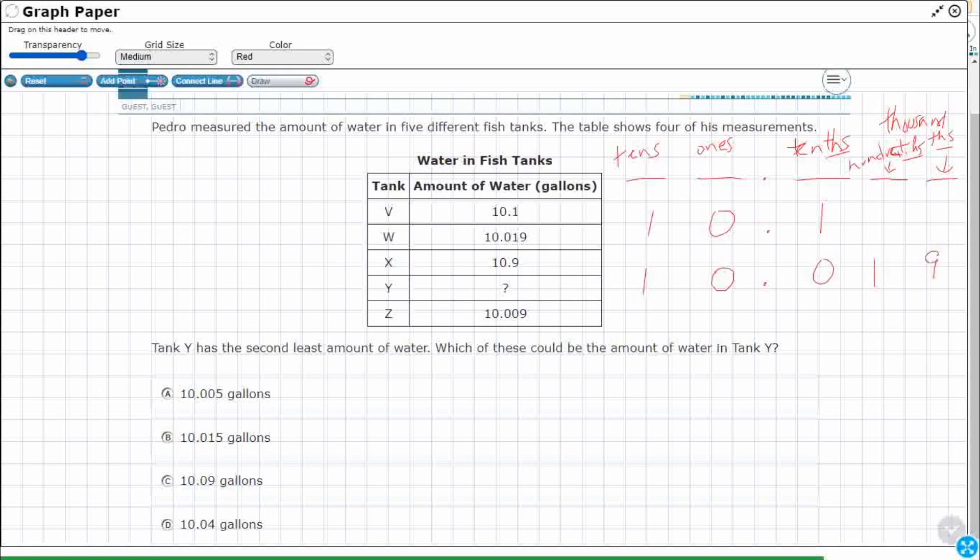Zero, one, nine. All right. Then I've got 10.9. I've got something that is missing in Y, but it's the second least amount.